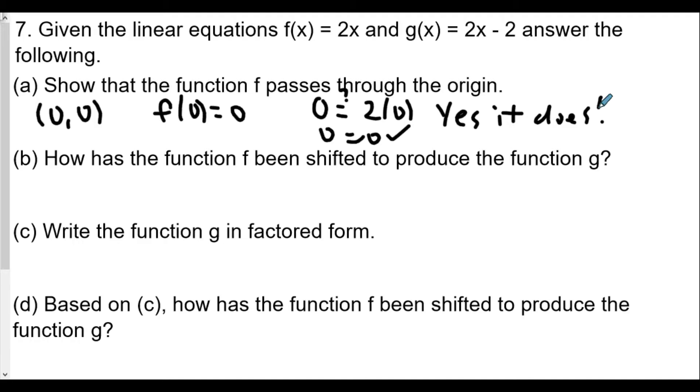Part (b): How is the function f shifted to produce function g? We see 2x is our original function, and now we see 2x - 2. So f(x) = 2x is shifted down by two units to produce g(x) = 2x - 2. That transformation is subtracting the number from the original function, which is a vertical shift. Minus two means down by two.